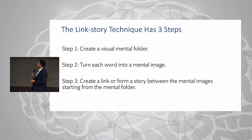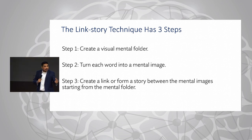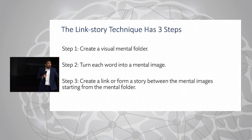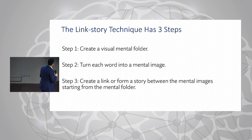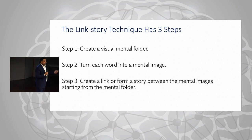Step two: turn each word into a mental image. Our brain has evolved to encode, store, and retrieve information based on images, not words. Text has only been around for maybe a hundred, two hundred, or a thousand years at most in the whole of human lifespan. Step three: create a link — the other word for a link is association — to make sure each item connects to the next.